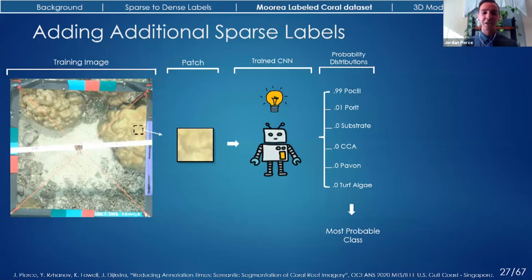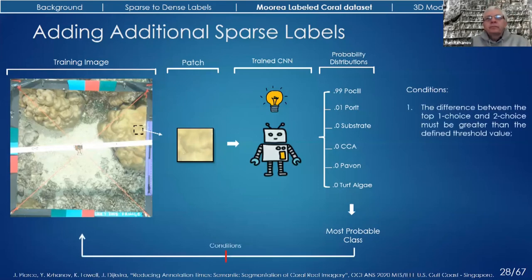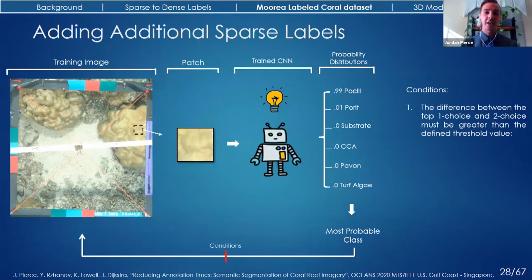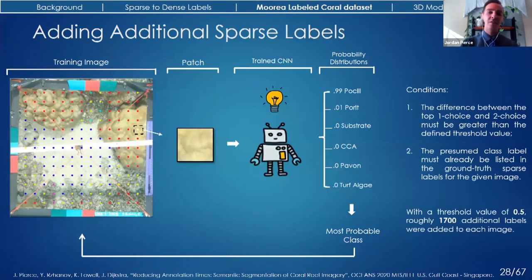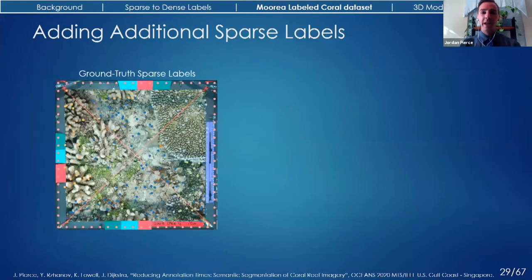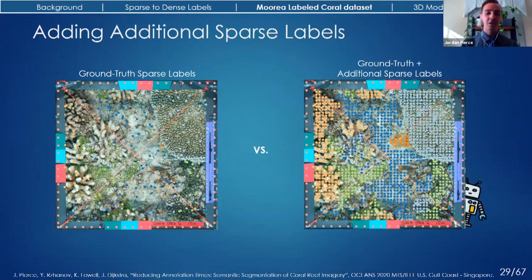I know this classifier is not going to be 100% accurate. So I set two conditions. The first was that the top choice needs to be higher than the second choice by a significant margin — I chose a confidence threshold value of 0.5 after performing an extensive visual assessment. The second condition was that the presumed class label needed to already be within the list of ground truth labels for that particular image. My reasoning was that I trust the original human annotator way more than I trust this classifier. With these two conditions, about 85% of all sparse labels were accepted, representing about an additional 1,700 labels per image.